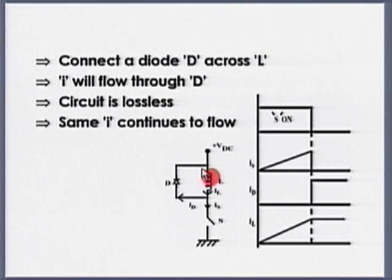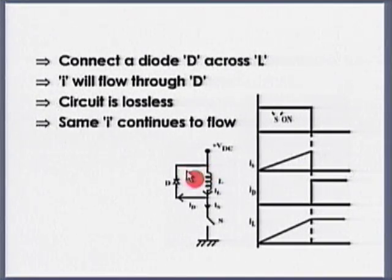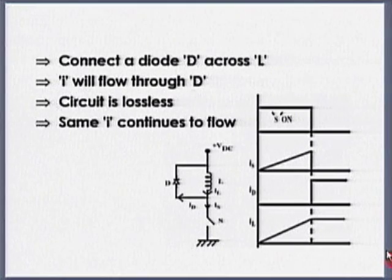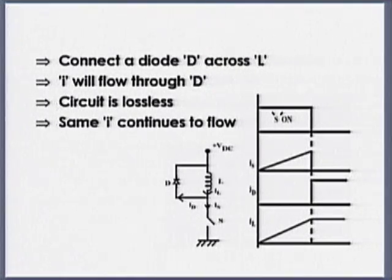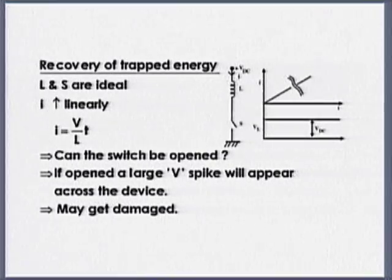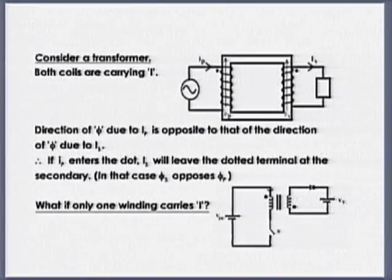If I want a faster decay of current, I connect an external resistance in this path and current decays faster. The question I am asking is: instead of dissipating it as heat, can we transfer it to the load or back to some other circuit or to the source? That is what the topic of recovery of trapped energy is about. Before getting into the recovery, I will briefly discuss transformer theory.